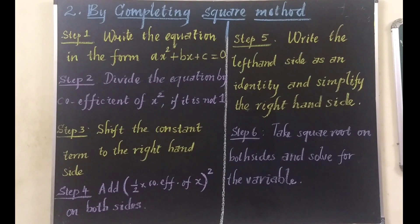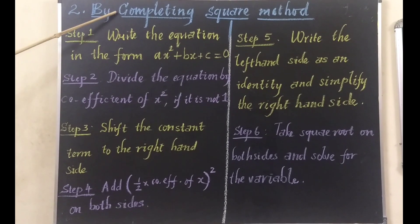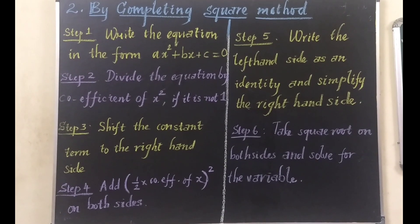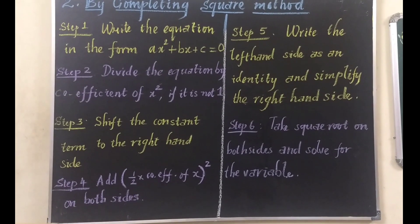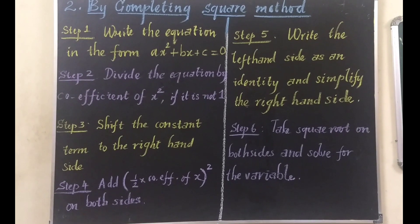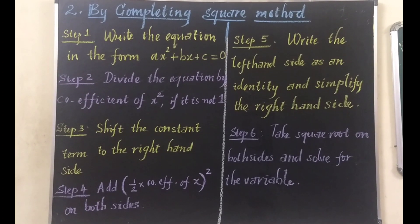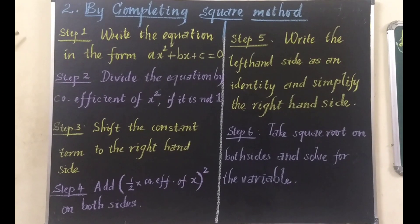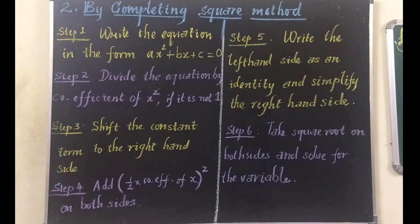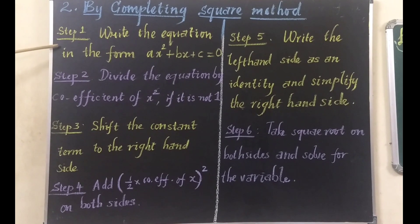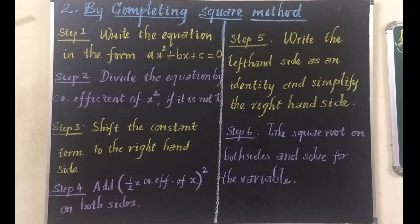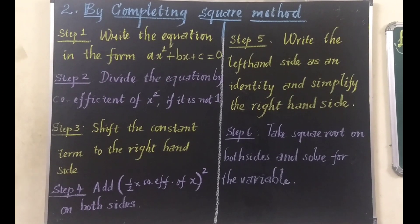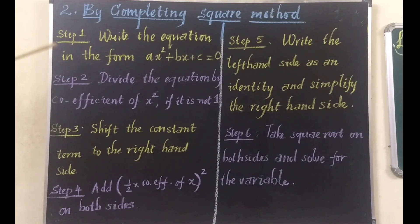Now let us see how to solve a quadratic equation by the completing square method. We are going to make the given quadratic equation a perfect square by following some steps — that is why it is called the completing square method. The previous method was the factorization method, which was very easy. But here it is somewhat different, so follow the steps carefully. In step 1, we have to look at the equation: is it given in the format ax squared plus bx plus c equals 0 or not? If it is in the correct format, leave it; otherwise, change the equation.